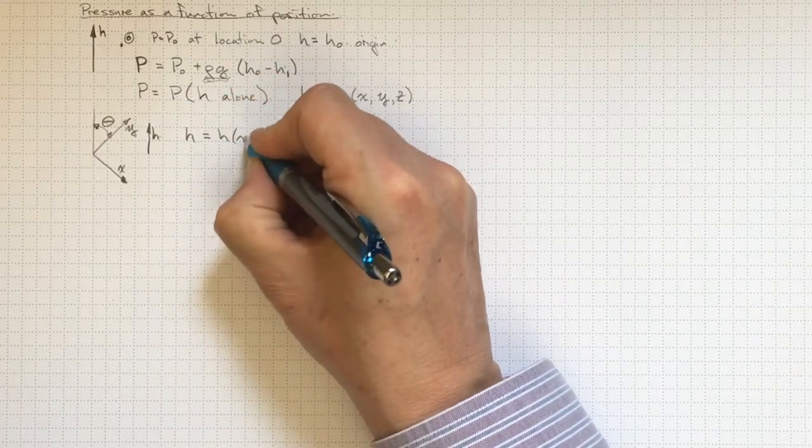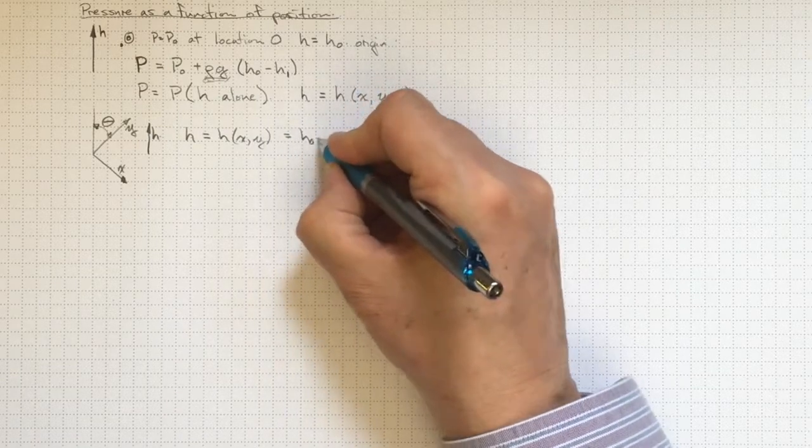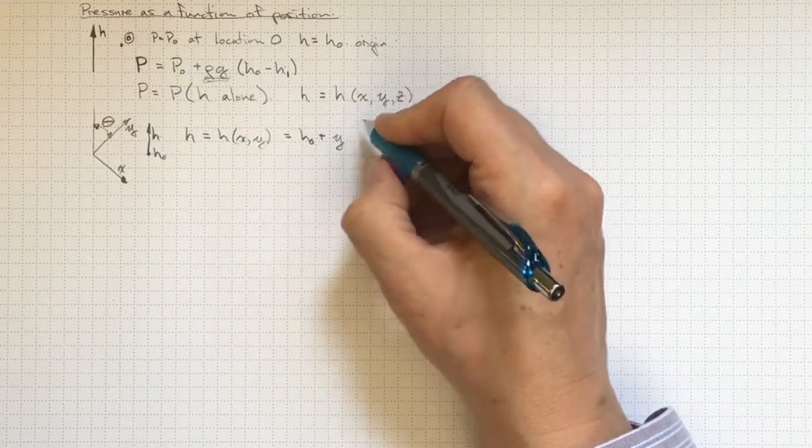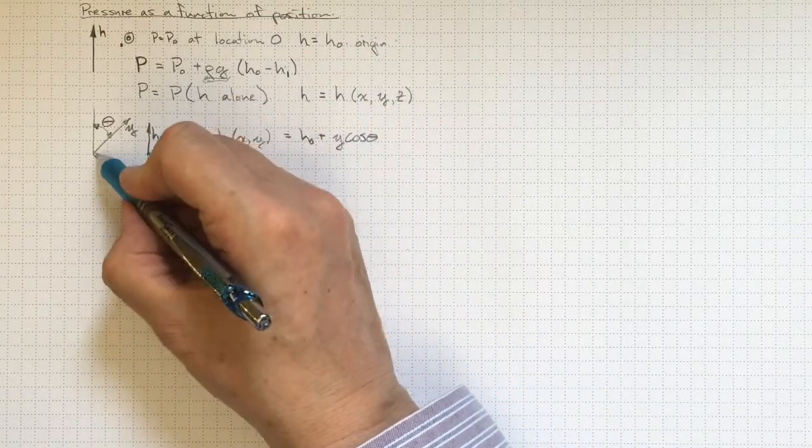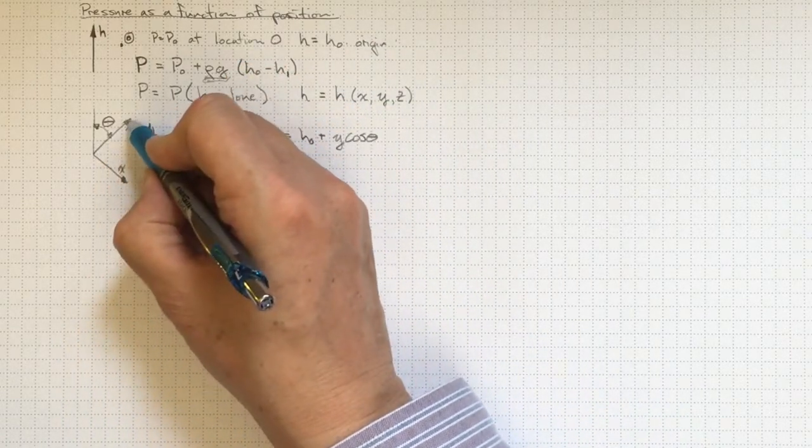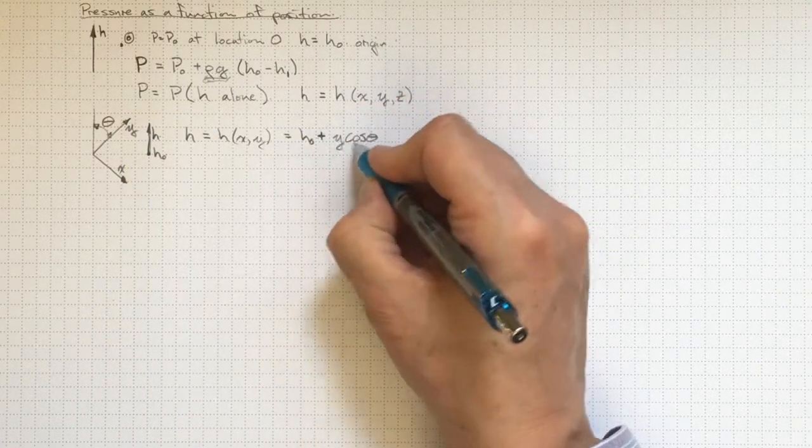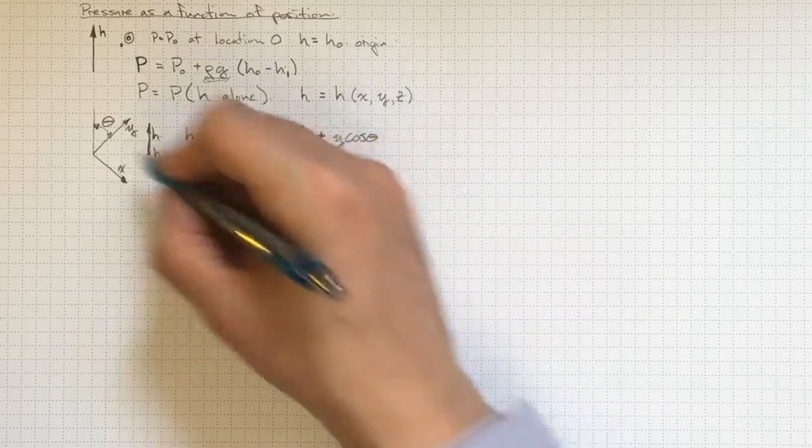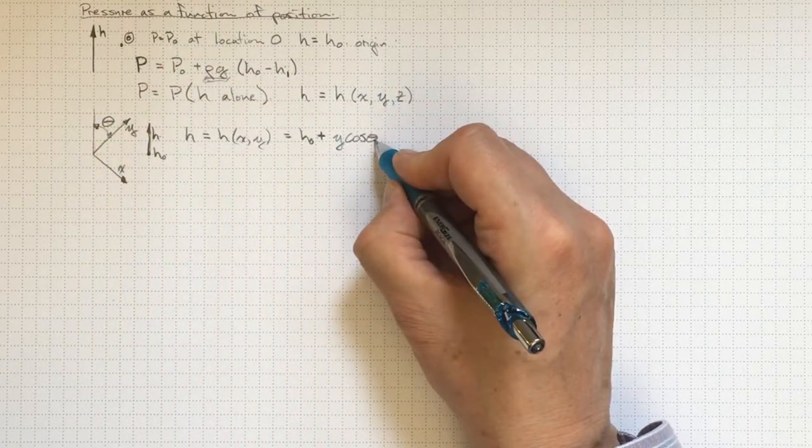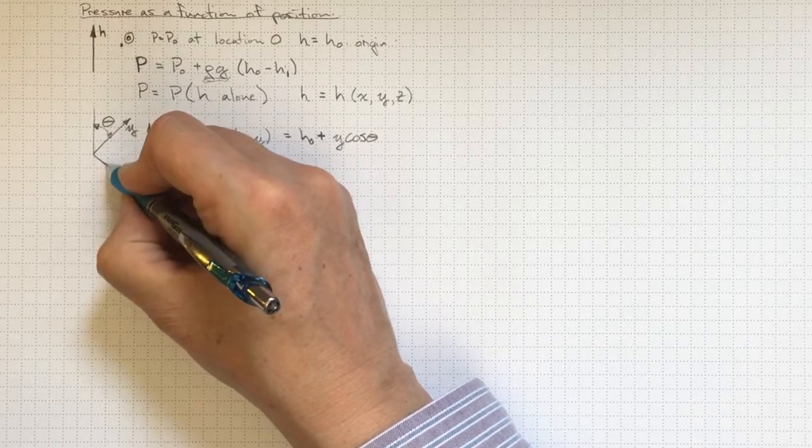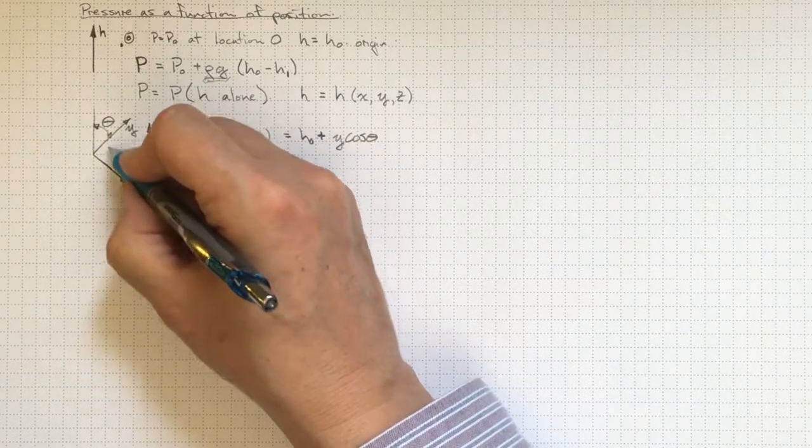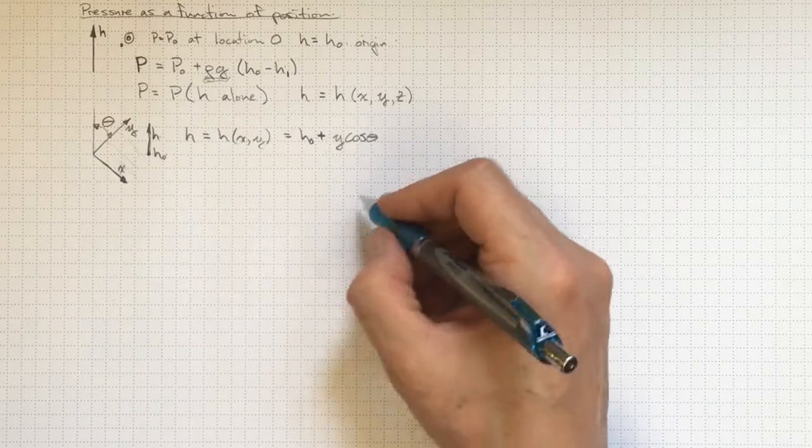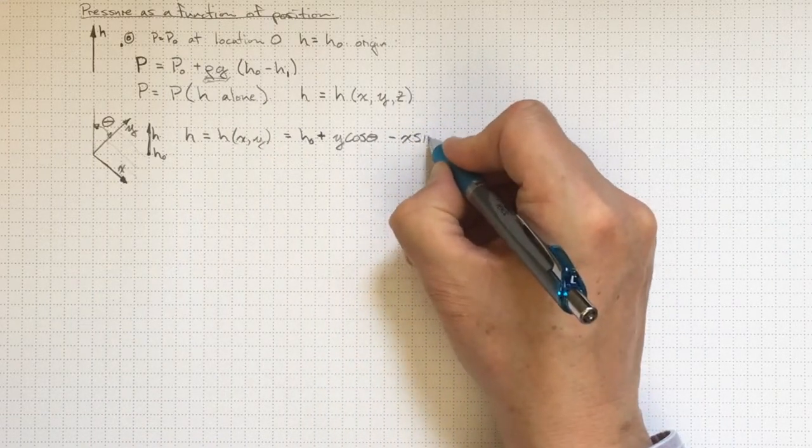So in this case, the height h is a function of x and y together. And it's h-naught plus y times cos theta. So as we go up in h, or we go out in y, they're the same sign, so we've got positive. And the angle between them is theta. If we go increasingly out in x along any line of constant y, we're going to be seeing h decreasing with increasing x. So we'll have negative x sine theta.